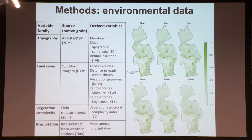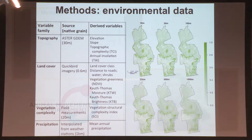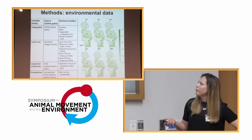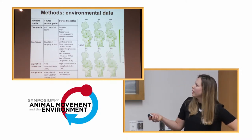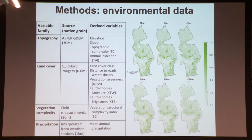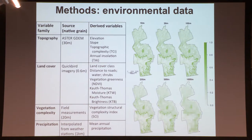We're going to be combining environmental and presence-and-absence data. Most of the habitat and land cover variables come from a very high resolution QuickBird image of the study site, from which we derived several variables. I want to point out this vegetation complexity layer, which we derived from a composite index of vegetation structure from field measurements and then predicted across the study area using NDVI texture metrics. I also want to point out the one climatic variable represented as a predictor here, which is precipitation, interpolated from local weather stations using topographical covariates.